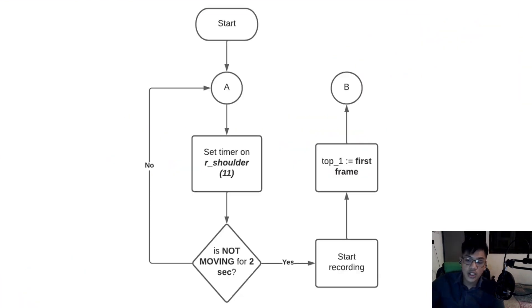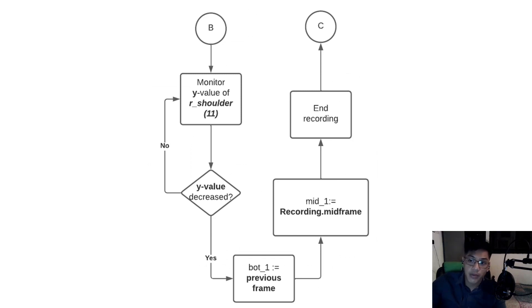The algorithm works like this. We start by setting a timer to a chosen landmark, say the right shoulder with ID 11, and check if it's not moving for a certain amount of time, say 2 seconds. If a motion was detected, we continue to reset the timer. If no motion was detected, we then start the runtime recording and assign the first frame to top 1. Top 1 here is the first segment. We monitor the progression of the y value of the right shoulder. Please take note that the values here are inverted. This is in accordance with the output values of the pose estimation model that we used, that is MediaPipe's pose estimation, or BlazePost. We know that the subject is now going down, so we check for the y value of the right shoulder. If it's still increasing, the subject is still going down, and we continue to monitor the landmark. If the value decreased, the person is already rising up, so we assign the previous frame to bot 1.